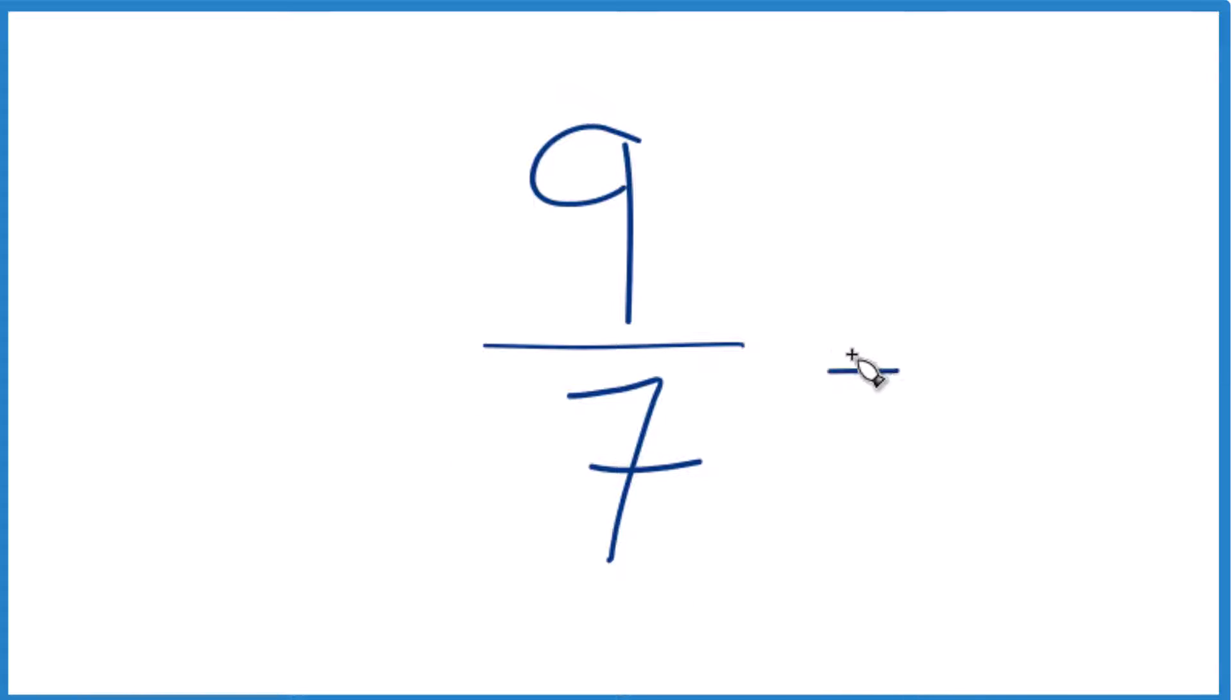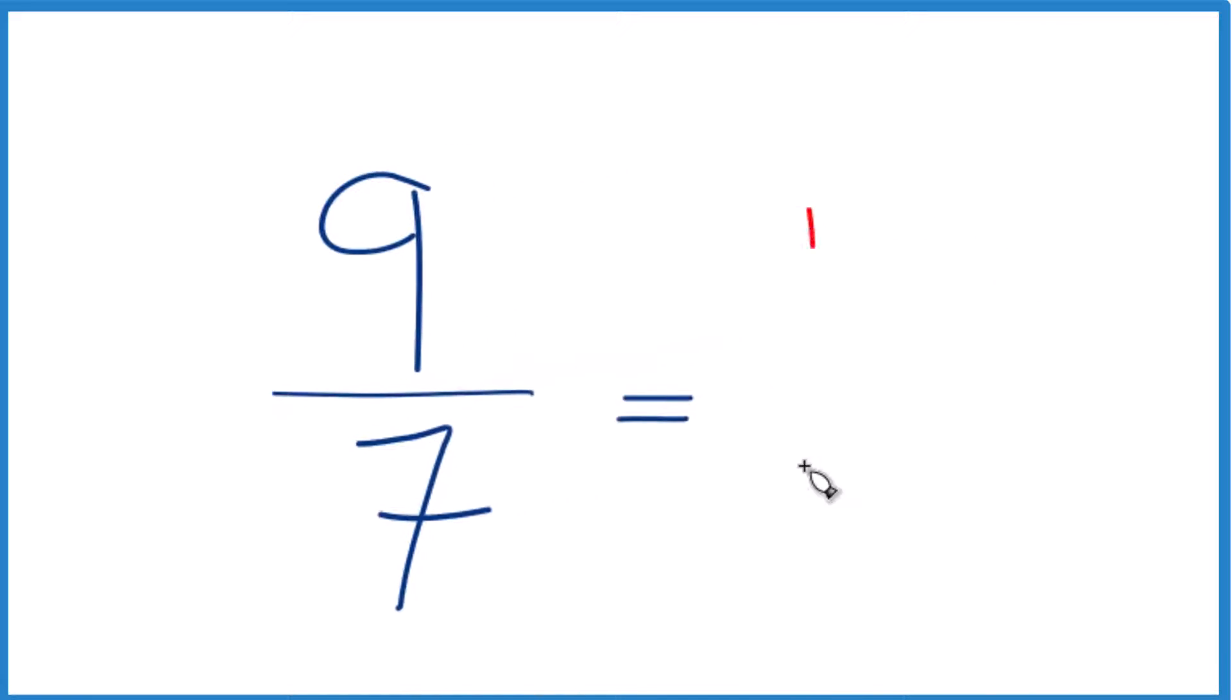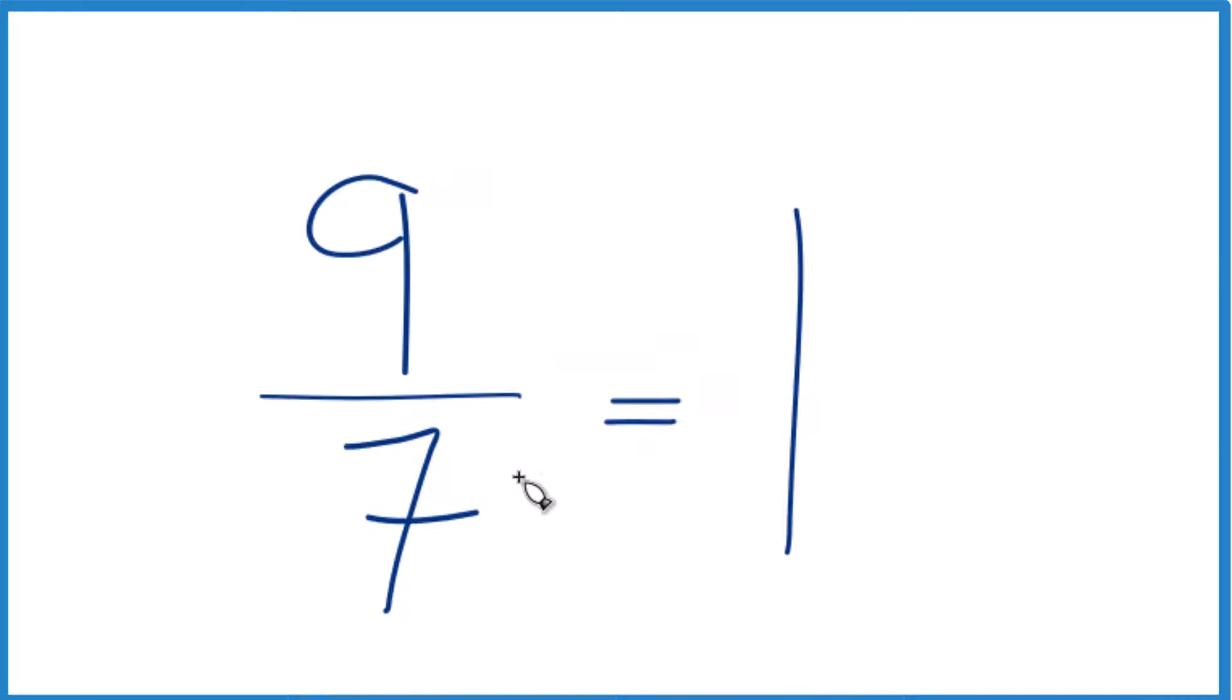So here's how you do that. You take nine and you see how many times seven goes into nine. So seven goes into nine one time, one times seven, that's seven, and then we have two as our remainder. So we put our two here as the numerator, and we just keep the seven here across.